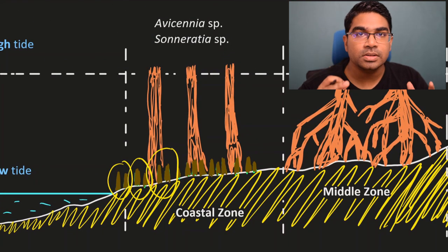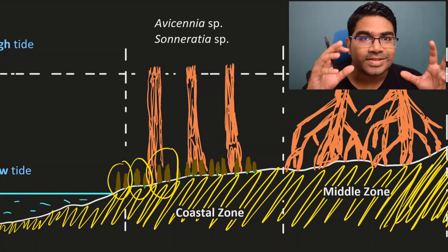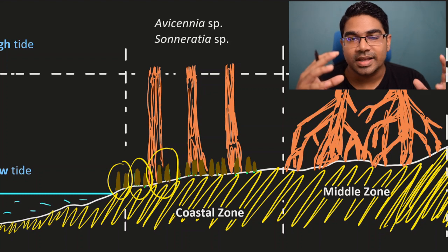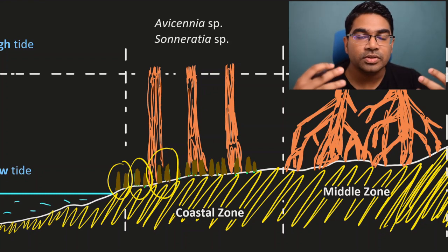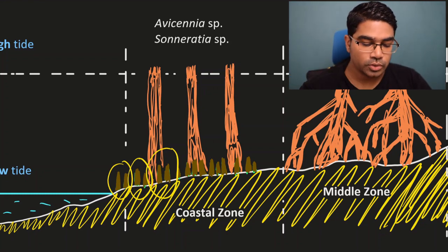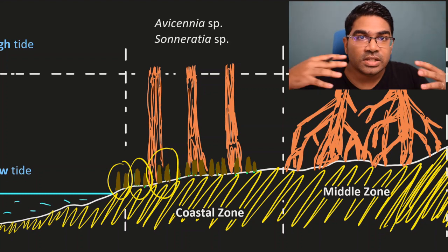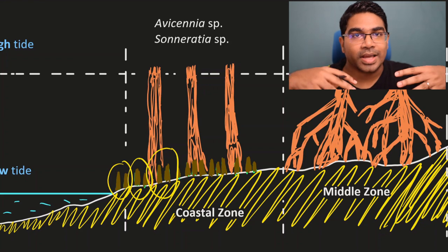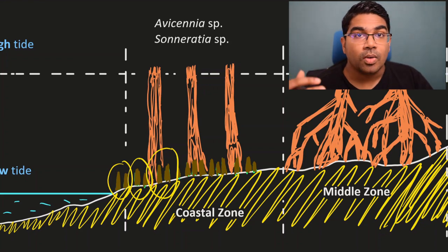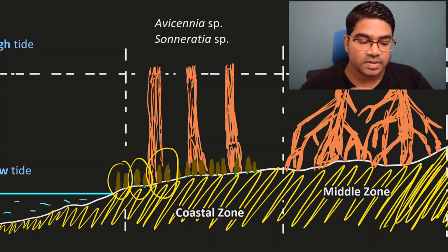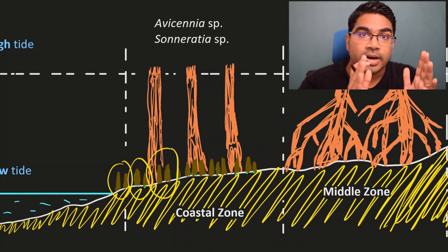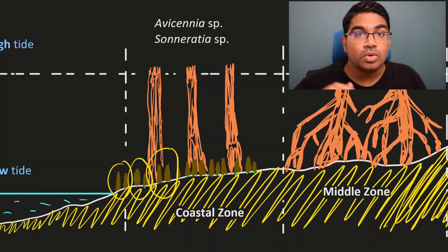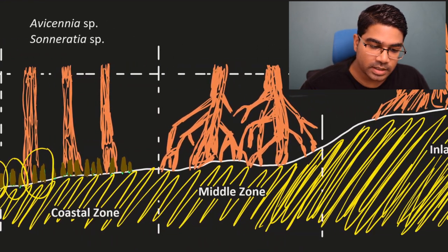Over time, these pneumatophores trap mud, causing the ground to become denser and harder. As this happens, the environment is changing due to the pioneer species. Now it is no longer as suitable for Avicennia and Sonneratia — it is more suitable for Rhizophora, the next species. The pioneer is still in place, but the environment has changed, making it more suitable for Rhizophora to come in.